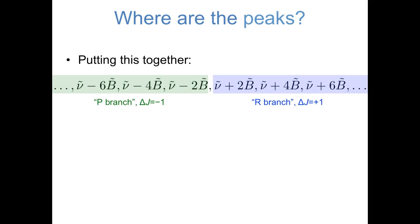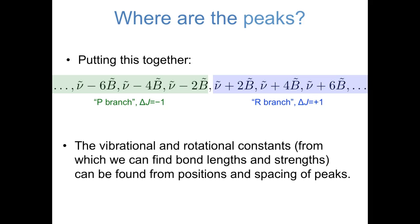So let's think about the information that we have in a spectrum. By looking at where the fundamental peaks are centered, we can find nu — the vibrational constant of our molecule — and from nu we can find the strength of a bond, the force constant. And based on the spacing of these fundamental peaks, we can find B, the collection of rotational constants, and from that we can find the length of a bond. So a lot of important physical information — the strengths and lengths of bonds in diatomic molecules — can be found from the infrared spectrum.